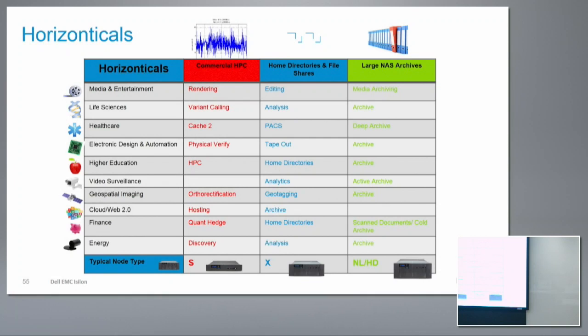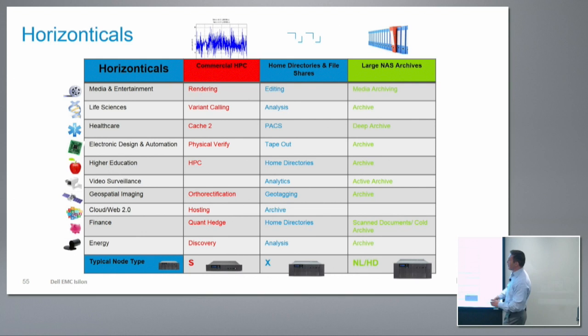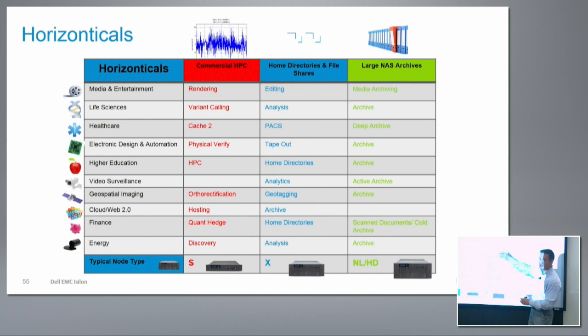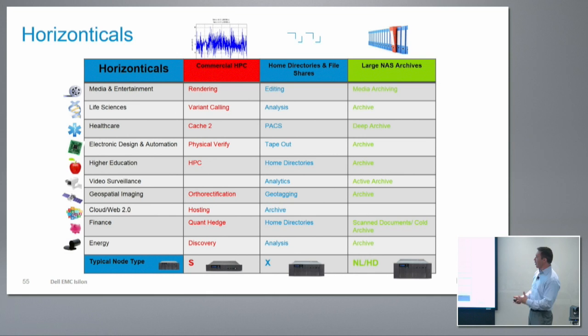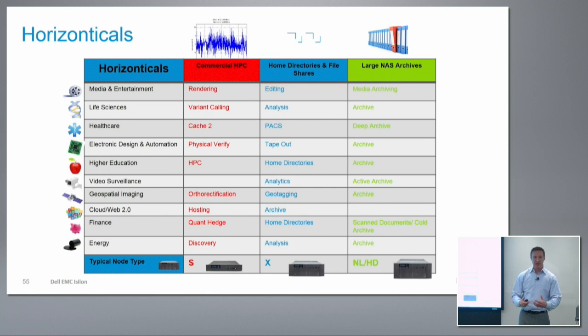Our focus is really on verticals and vertical applications. We call them horizontals because they're not just vertical workloads — if you look at any of the verticals we operate in, there are a number of different horizontals, whether home directories, archives, or commercial HPC. And in each vertical they mean different things. For example, in media and entertainment you might have a media archive, but in healthcare an archive would be a PACS system. We talk to customers about their specific workloads — analytics, geotagging, hosting, quant-type workloads in financial services — and optimize our product around solutions for specific verticals.